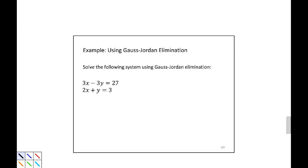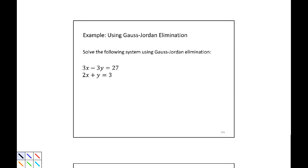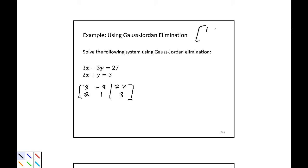For our example, solve the following system using Gauss-Jordan elimination. The first equation is 3x minus 3y equals 27, and the second equation is 2x plus y equals 3. I can write this as an augmented matrix with first row 3, negative 3, | 27, drawing a vertical bar between the second and third entries, and second row 2, 1, | 3. Now, following the steps, I want to write my reduced row echelon form as my goal up in the corner.